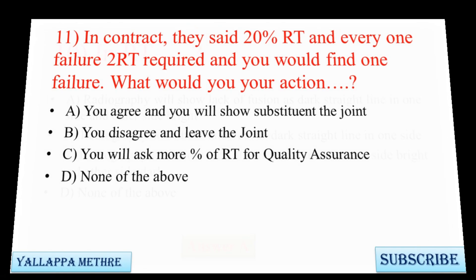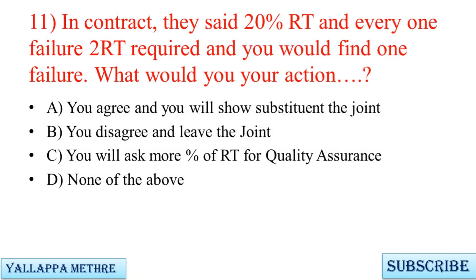Question 11: In the contract they specified 20% RT, and every one failure in RT requires additional testing, and you find one failure. What would be your action? A. You agree and will show the subsequent joint. B. You disagree and leave the joint. C. You will ask for a higher percentage of RT for quality assurance. D. None of the above.